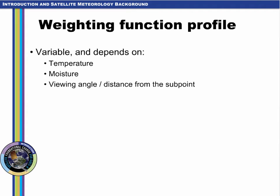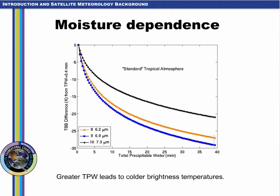We will discuss the temperature dependence in a case study later, but next we'll look at moisture and then viewing angle. For clear sky conditions, brightness temperatures vary with atmospheric moisture for the three ABI water vapor bands. Given the same temperature profile — in this example the standard tropical atmosphere — a much colder brightness temperature is observed with more total precipitable water. Generally speaking, the higher the TPW, the greater the cooling on the brightness temperatures since water vapor absorption occurs at a higher altitude in the troposphere.